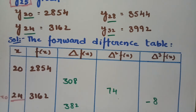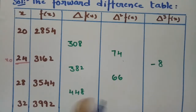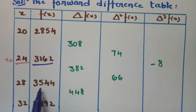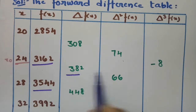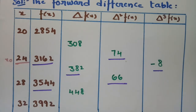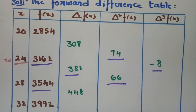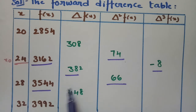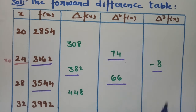For Bessel's interpolation formula, we take two values then a single value, then two values and a single value. In contrast, for Stirling's formula, the pattern is single, double, single, double. Here the pattern is double, single, double, single.